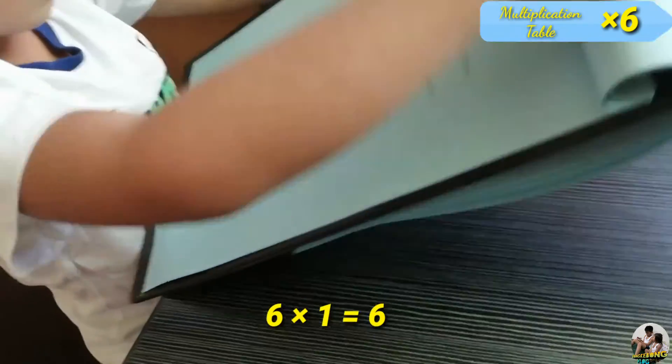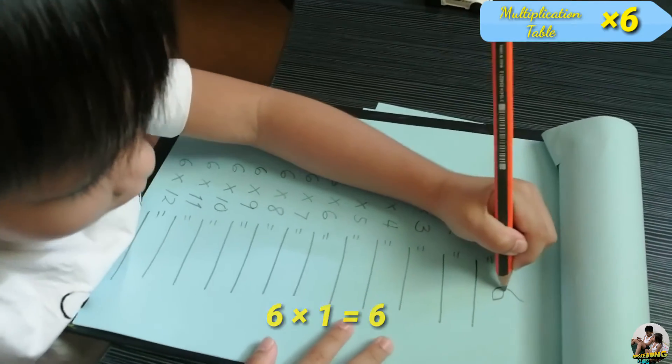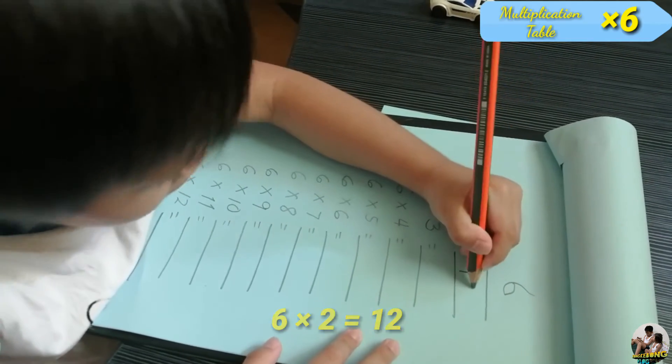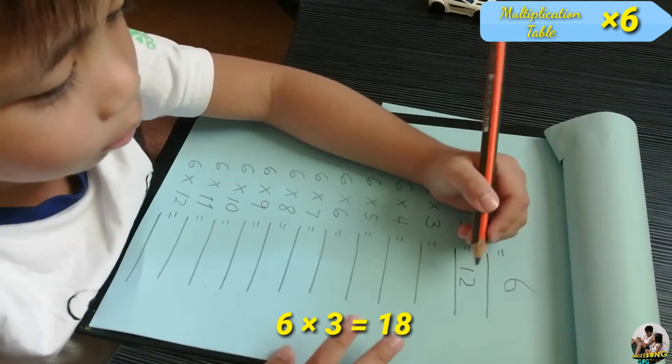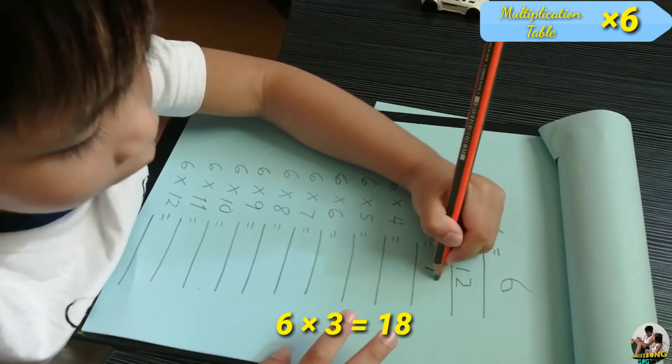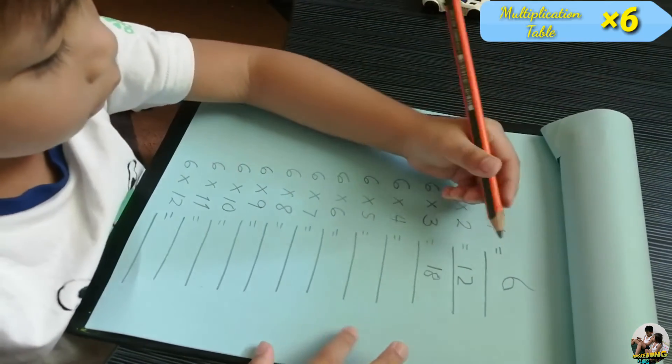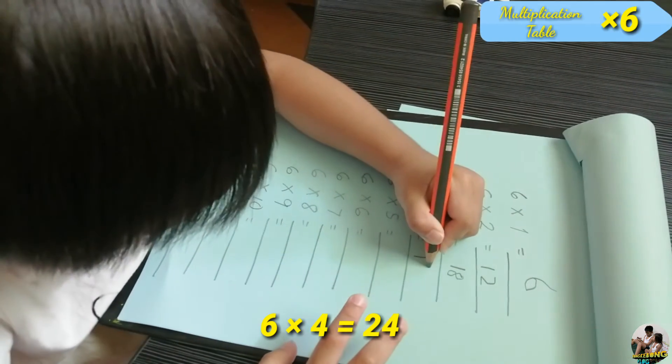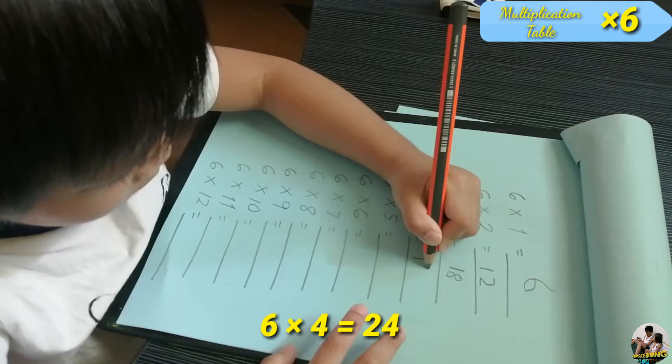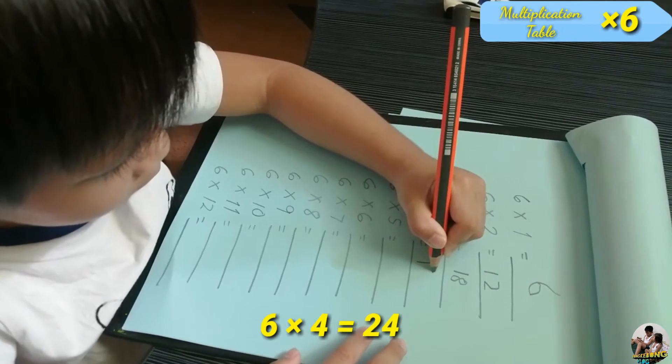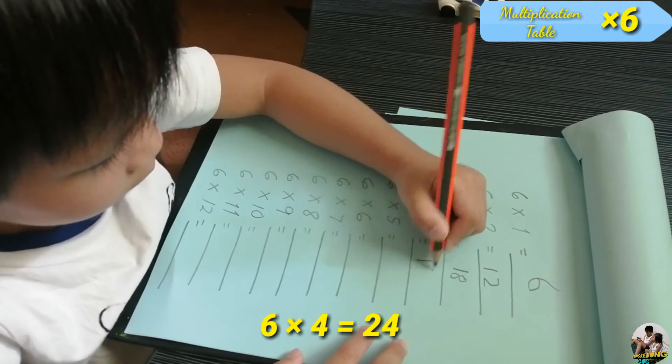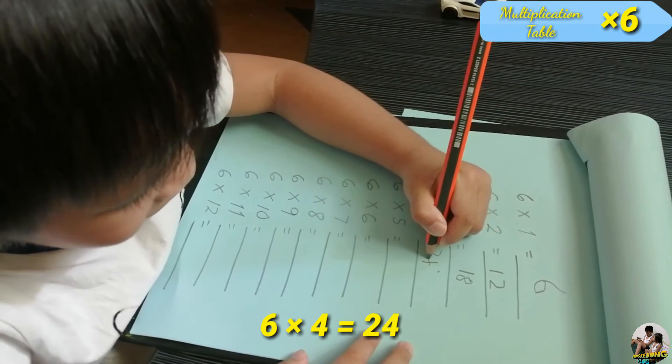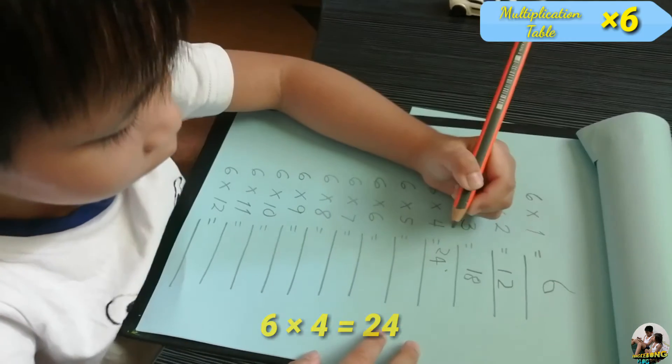Six times one equals six. Six times two equals twelve. Six times three equals eighteen. Six times four equals... What's the answer? Twenty-four. Very good.